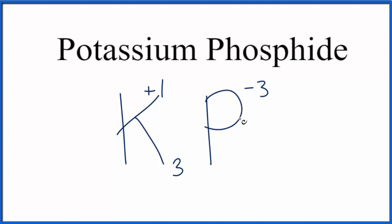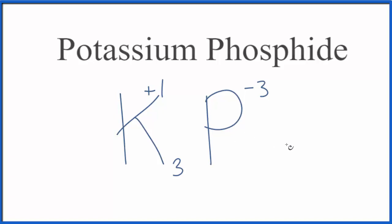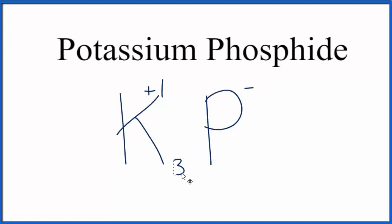We can quickly check our work using the crisscross method. To do that, we'll take the 3 here and move it down to the subscript, and then take the 1 here and move that to the subscript for phosphorus.